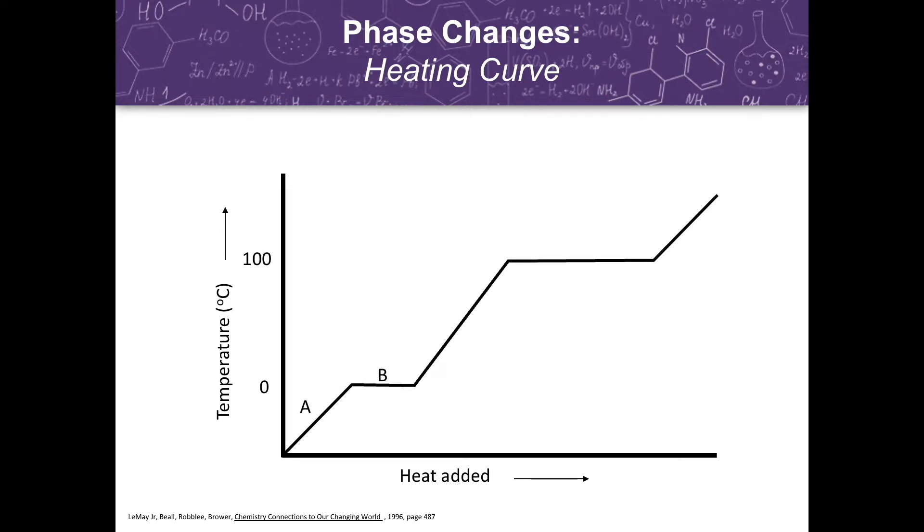we have point A, where a solid exists. As the temperature increases, it reaches its melting point at point B. More heat causes the solid to melt to a liquid without increasing its temperature, which we observe in the plateau from point B to point C.